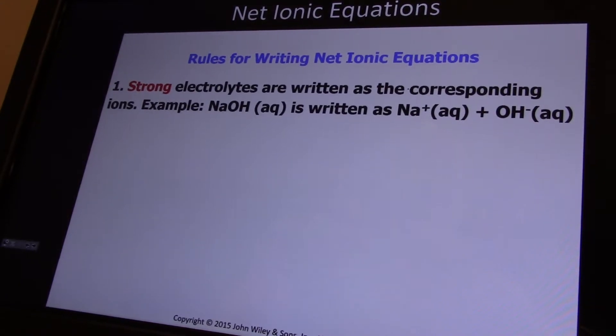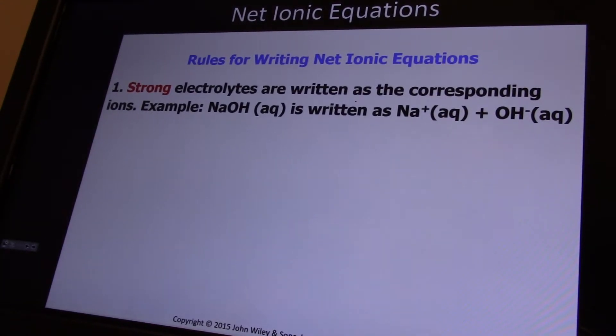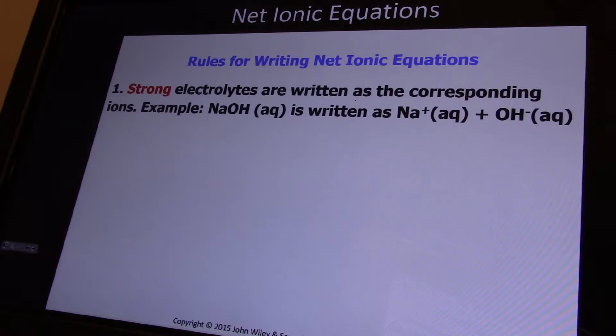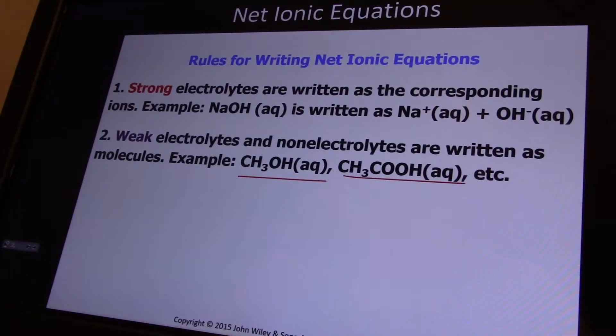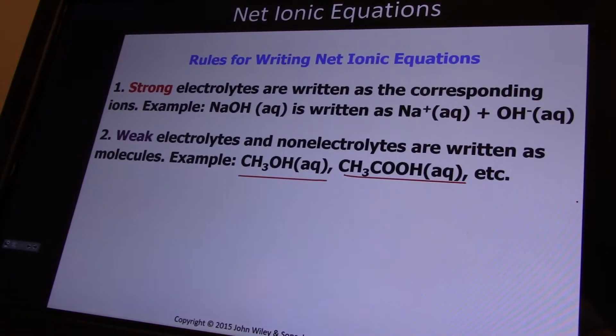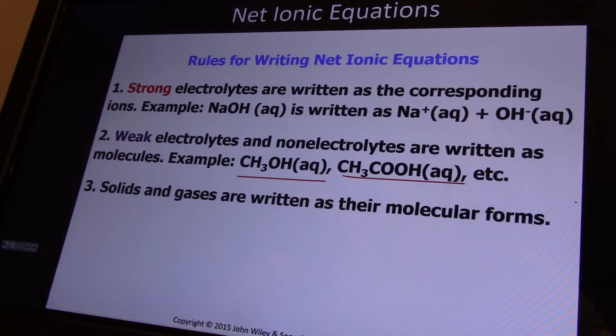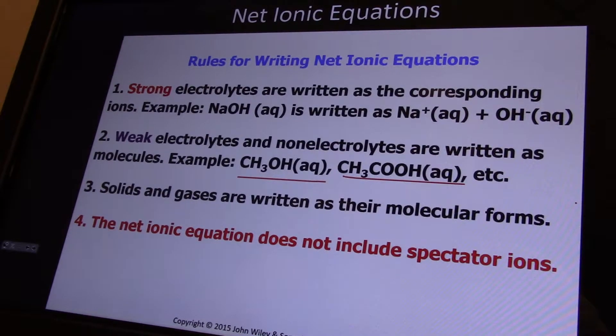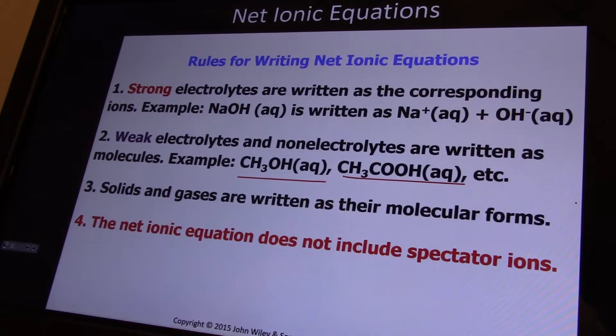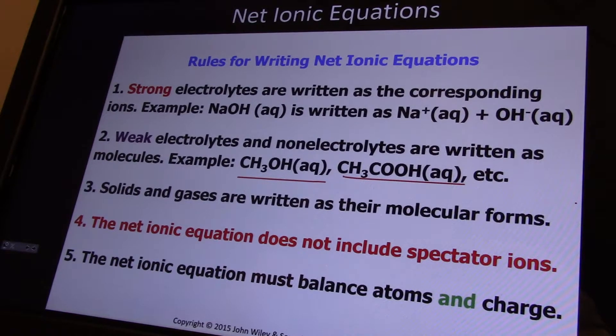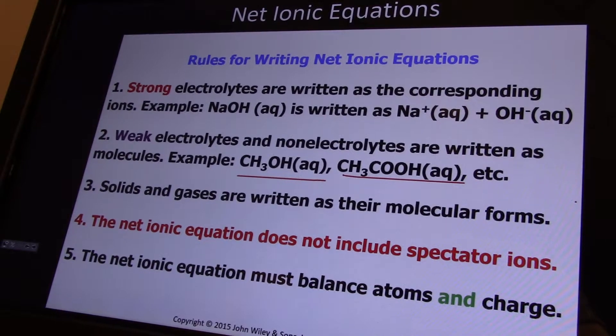Rules for writing net ionic equations: Strong electrolytes are always broken apart into their corresponding ions. Sodium hydroxide is sodium plus and hydroxide minus. Weak electrolytes are held together because only a very small fraction dissociates. Solids and gases are also held together in their molecular forms. To get the net ionic equation, subtract spectator ions - any aqueous ion on both sides gets canceled out. The net ionic equation must balance atoms and charge.